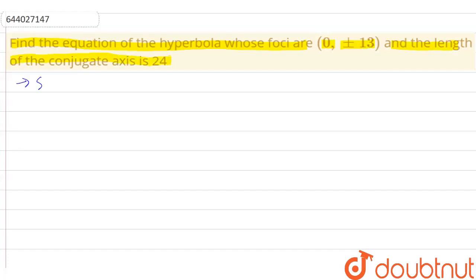Since foci is on y-axis, therefore equation is y² / a² minus x² / b² equal to 1.